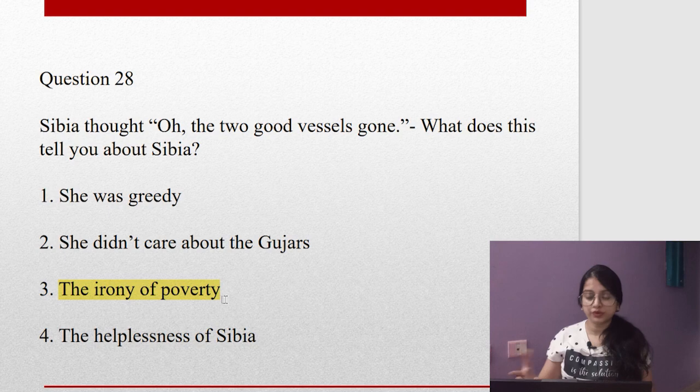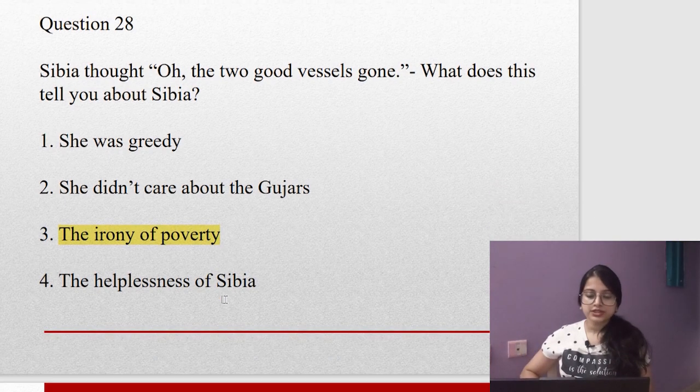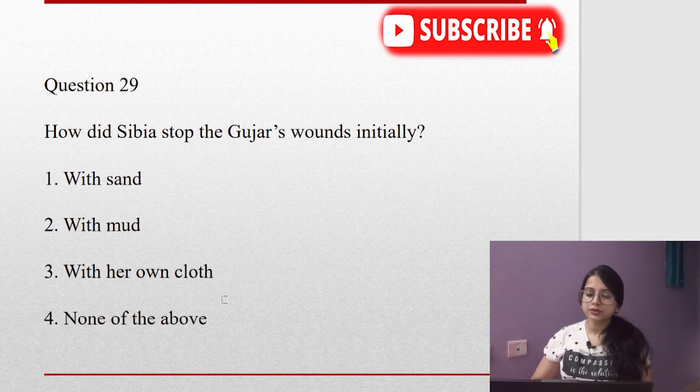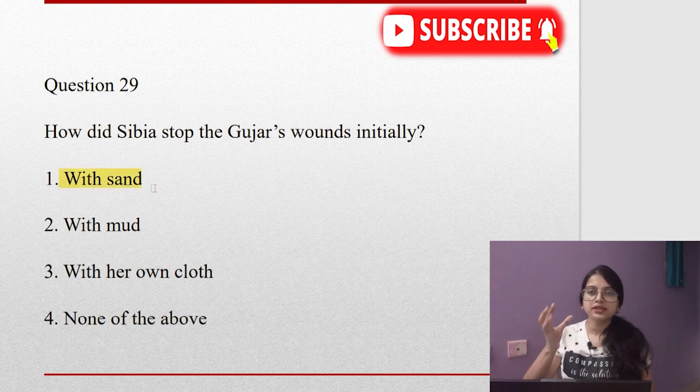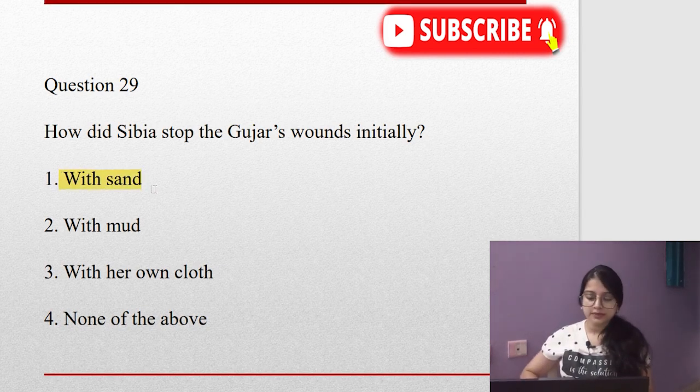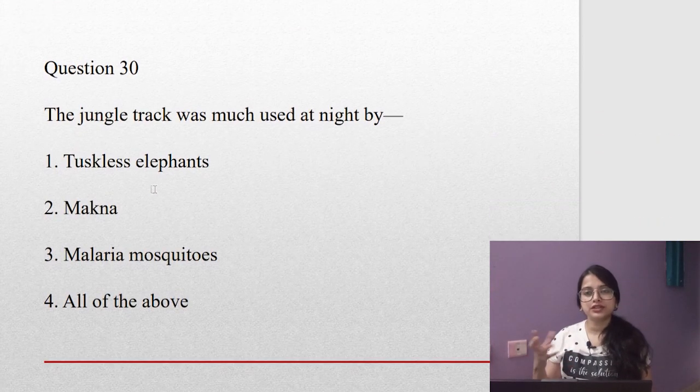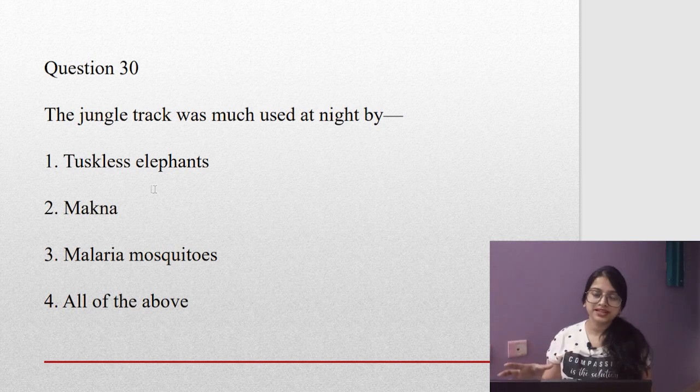Question twenty-nine: How did Sibia stop the Gujar's wound initially? With sand, with mud, with her own cloth, or none of the above? As is written in the book, it was with sand.